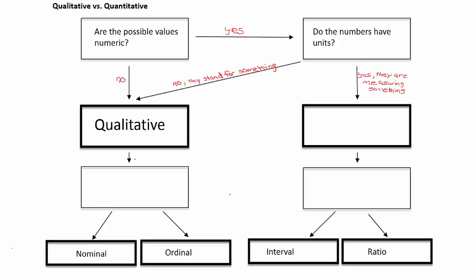Going straight down, we ask ourselves another question to determine if the data is nominal or ordinal: do the values follow a natural order? If the answer is no, we go with nominal data. If the answer is yes, we call it ordinal data. I always think of nominal as being synonymous with name, and ordinal as being synonymous with order — the words actually sound like what they mean.